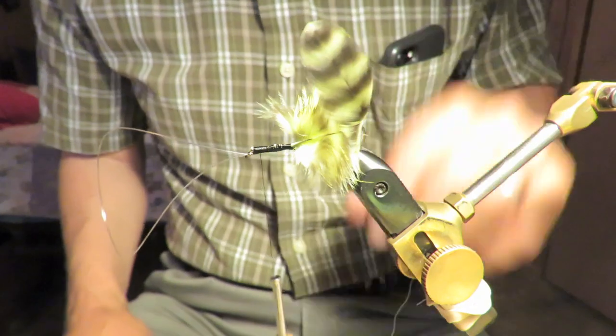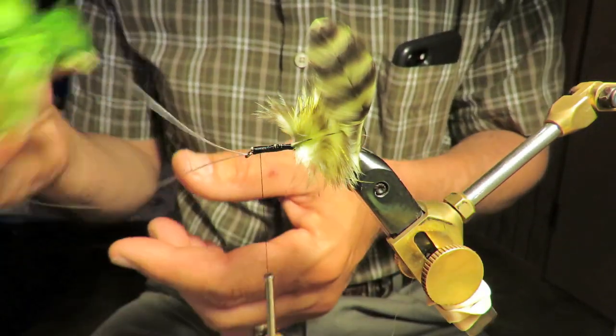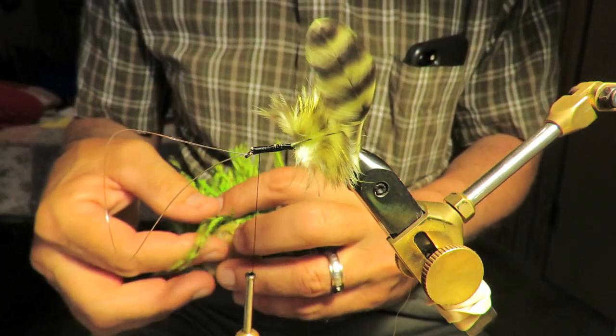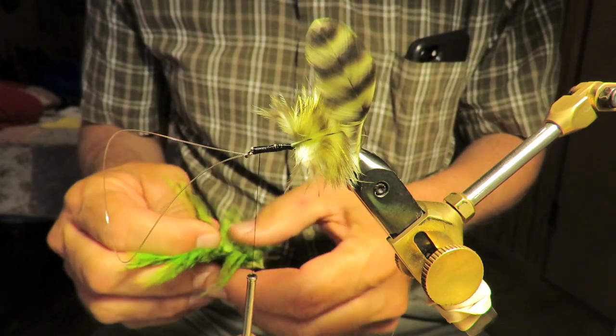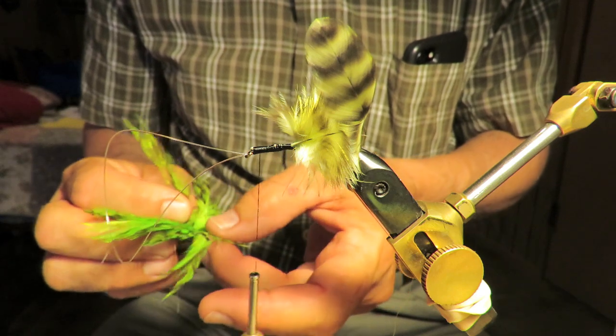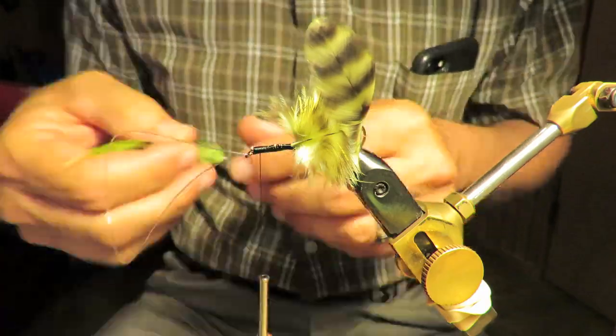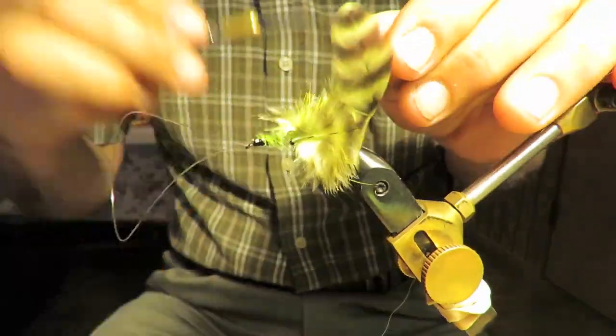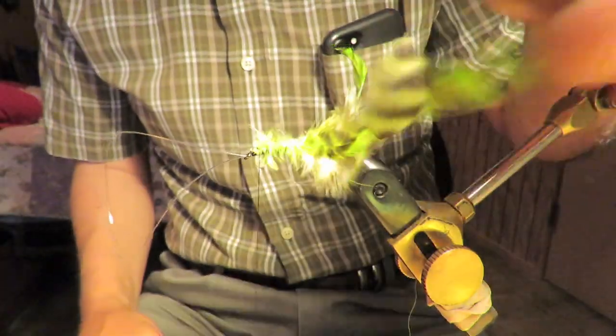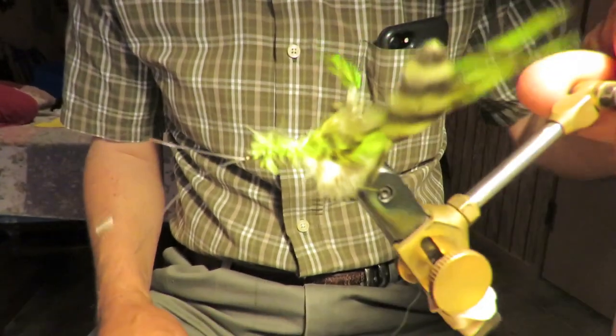Now we're gonna tie in a hackle feather. Hmm, maybe I could put two of these in there just to give a little more color. I think I will. I think I'm gonna do something a little different with this fly. I'm gonna take two of these and simply extend them back over the top. Strap it all down. Oh yeah, that's gonna look good. See that? That looks good.